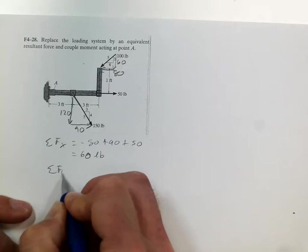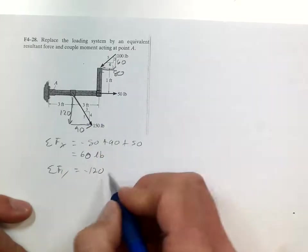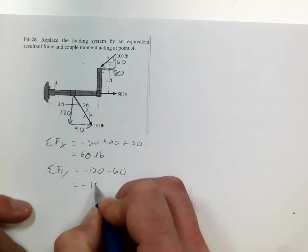Sum the forces in the y, we have negative 120, negative 60, gives us negative 180.